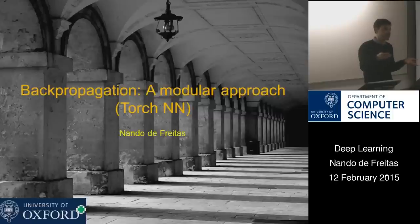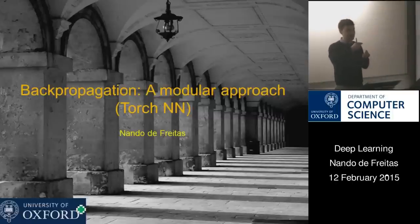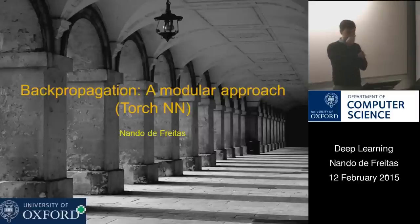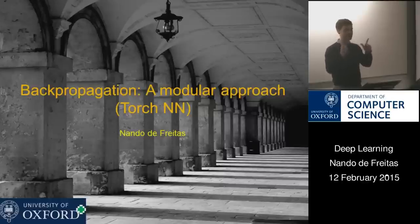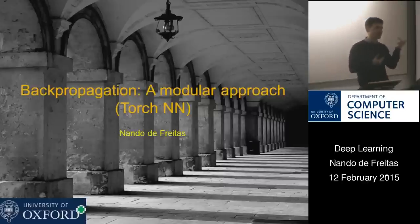In this layer-wise way of doing things, we only have to specify three things: what function the layer computes, the derivative with respect to the input, and the derivative with respect to the parameters if the layer has parameters. This is how we code neural networks properly — you code each layer independently and provide three functions: forward, backward derivatives, and gradients. Layers are objects with these three messages.